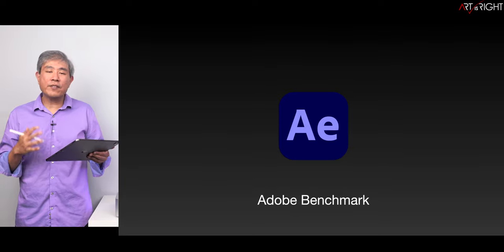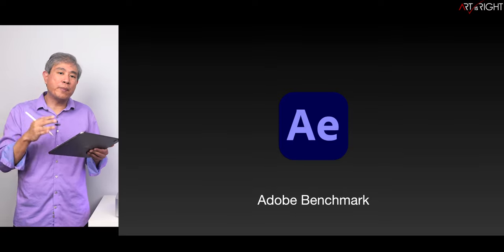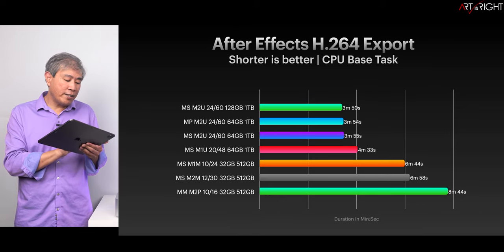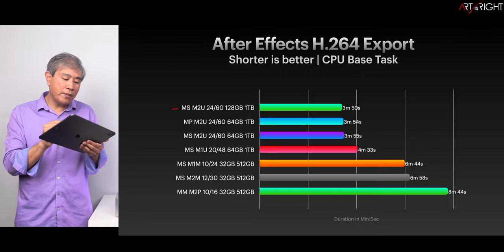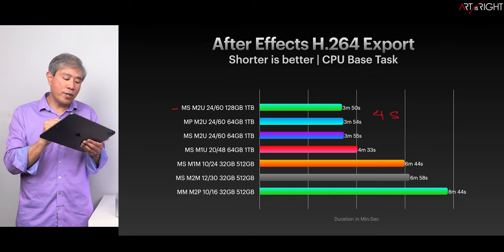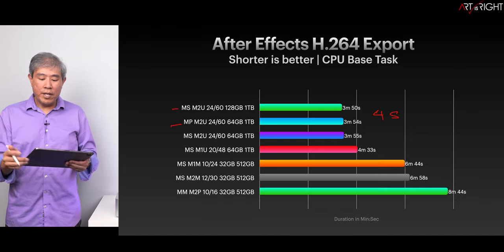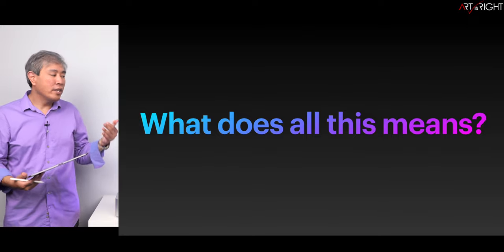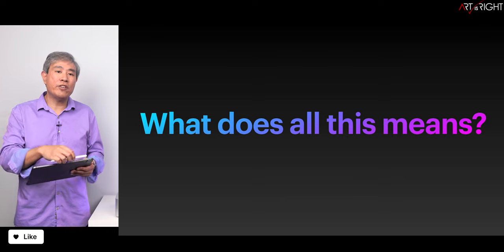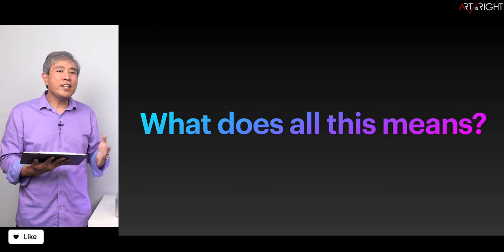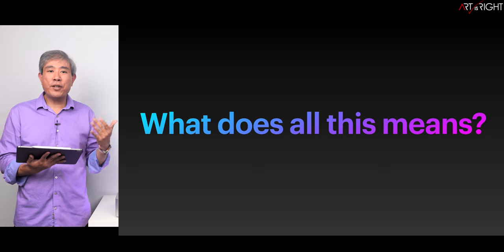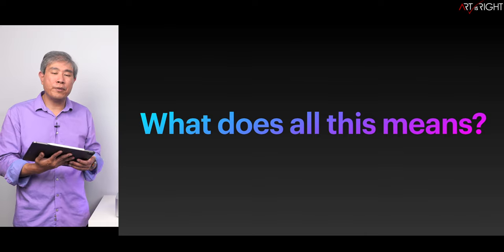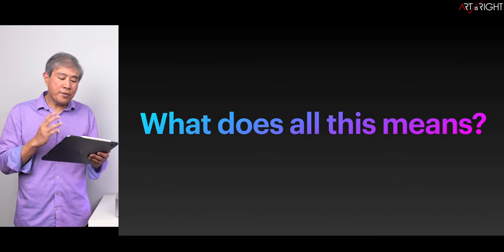Now let's take a look at After Effects using Adobe's benchmark. The 128 gigabyte machine runs best — four seconds faster than the Mac Pro. This tells us that the Mac Pro performance in After Effects is essentially the same as the Mac Studio. The main question is whether you need the internal expansion, because having an extra fan that may cool the system slightly better does not necessarily make the M2 Ultra run any faster compared to a Mac Studio.